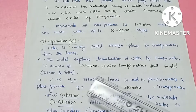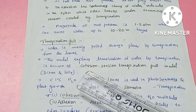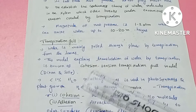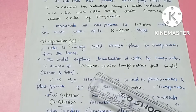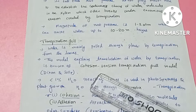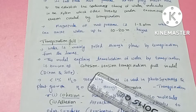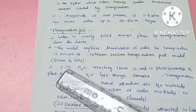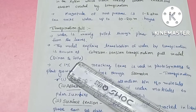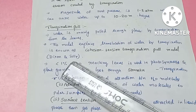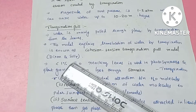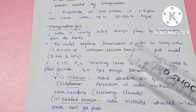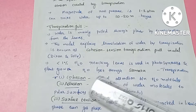This model explains the translocation of water. It is called the cohesion-tension transpiration pull model, proposed by Dixon and Jolly. Dixon and Jolly are the two scientists who proposed this cohesion-tension transpiration pull model.